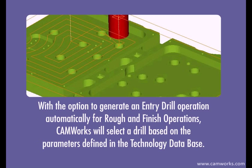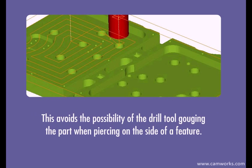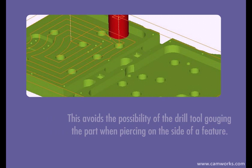With the option to generate an entry drill operation automatically for rough and finish operations, CAMWORKS will select a drill based on the parameters defined in the technology database. This avoids the possibility of the drill tool gouging the part when piercing on the side of a feature.